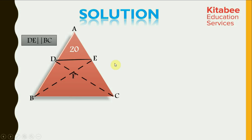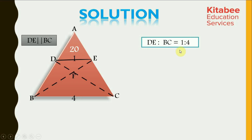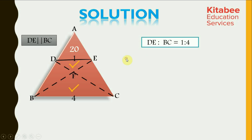Now, let's look at the third part — we have to find the area of triangle DFE. The ratio of sides DE to BC is 1 is to 4. If we consider triangle DEF and triangle BFC, DE is parallel to BC, so alternate interior angles are equal. Therefore, triangle DFE and BFC are similar to each other, and all corresponding sides must be in the ratio of 1 is to 4. So FE and BF are in the ratio of 1 is to 4, and DF and FC must also be in the ratio of 1 is to 4.